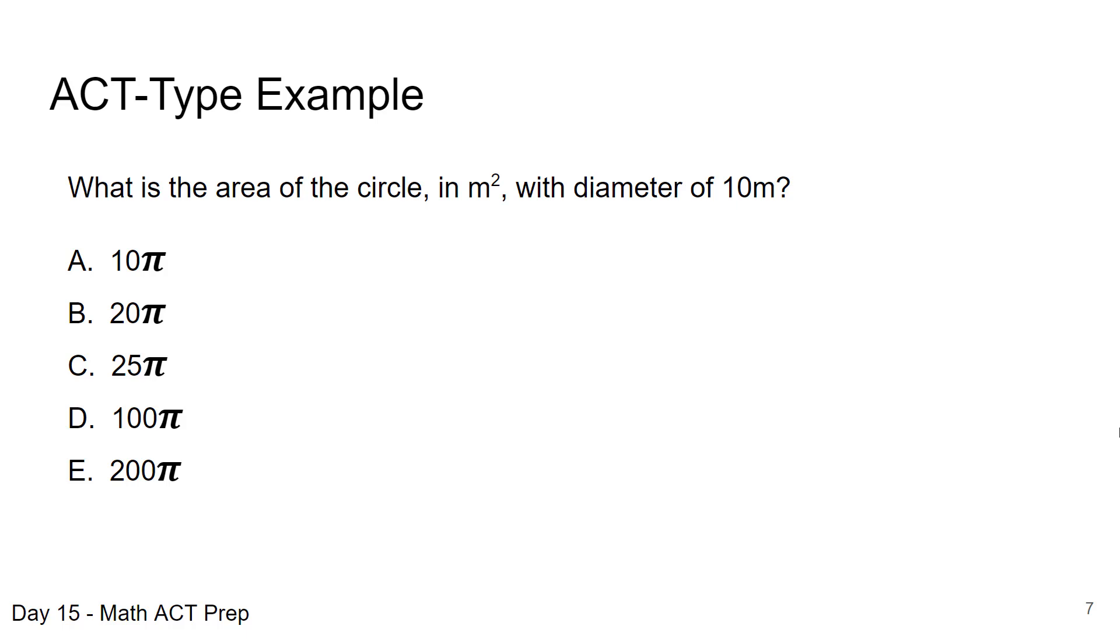It asks for the area of the circle in meters squared with diameter of 10. So if we remember, our formula for area is πr². So we're going to have to take the diameter that we're given of 10, divide that by 2, and that gives us 5, so really we're squaring 5, so we have π(5)², which is equal to 25π, answer choice C.